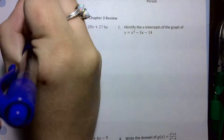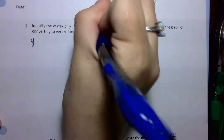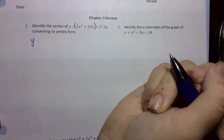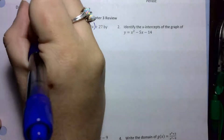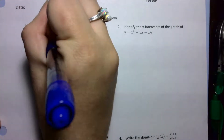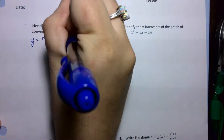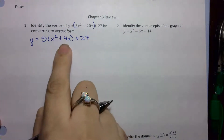What I want to do is group my first two terms together and then factor out only constants — I want to keep the x squared and x. So I'm going to pull out a 5, that leaves me with x squared plus 4x, and then I have plus 27. Then I want to take a look at my b value inside the parentheses, which is 4.